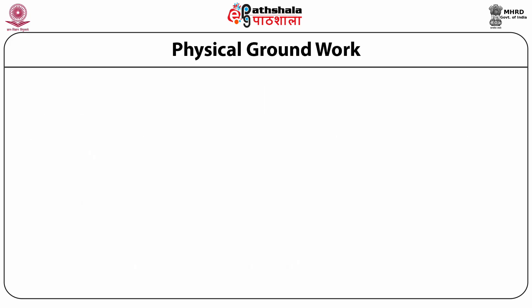The basic physical groundwork for EDX is laid by a set of four quantum numbers: the principal quantum number, angular quantum number, magnetic quantum number, and spin quantum number.